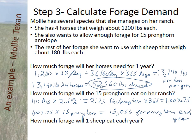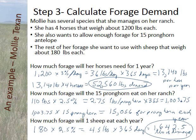Now we have to decide how much each sheep needs in a year. The sheep weigh 180 pounds. They're ruminants, so they eat 2.5% of their body weight per day — 4.5 pounds per day — times 365 days in a year. The total demand per sheep is 1,642.5 pounds per year.